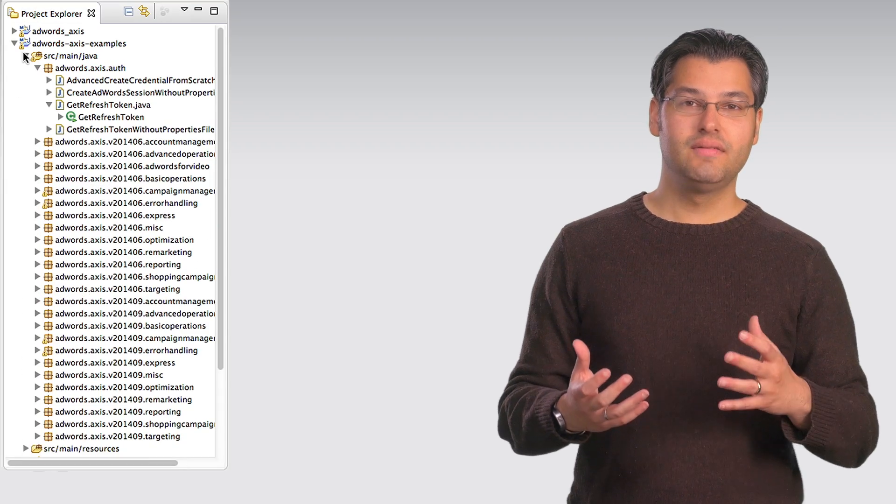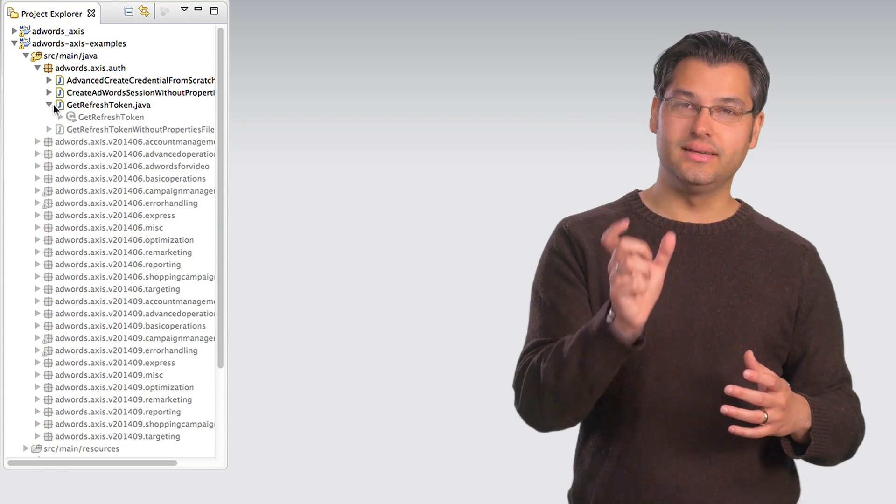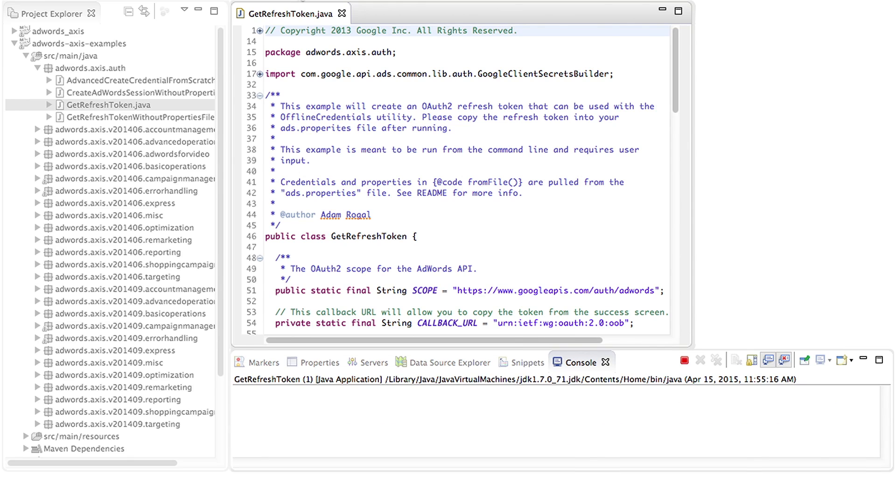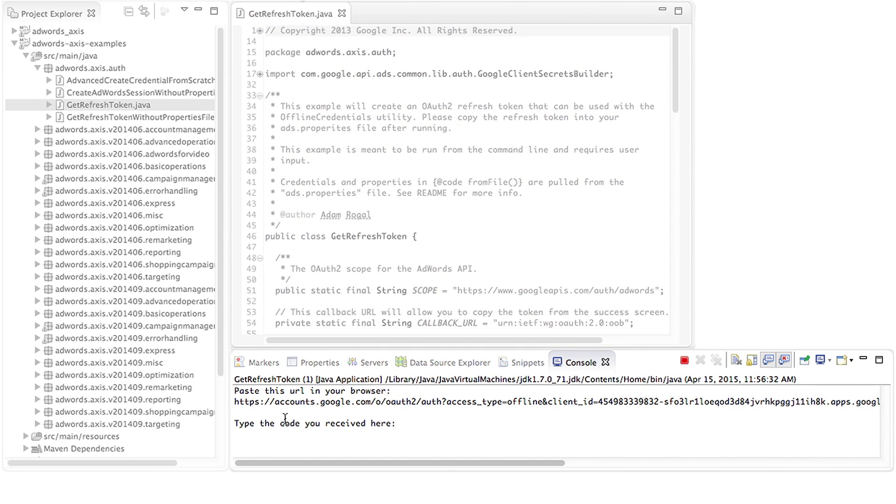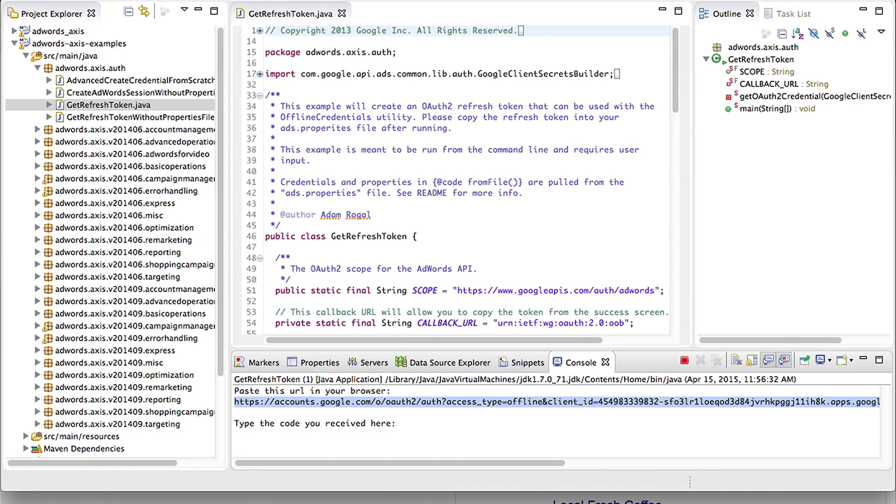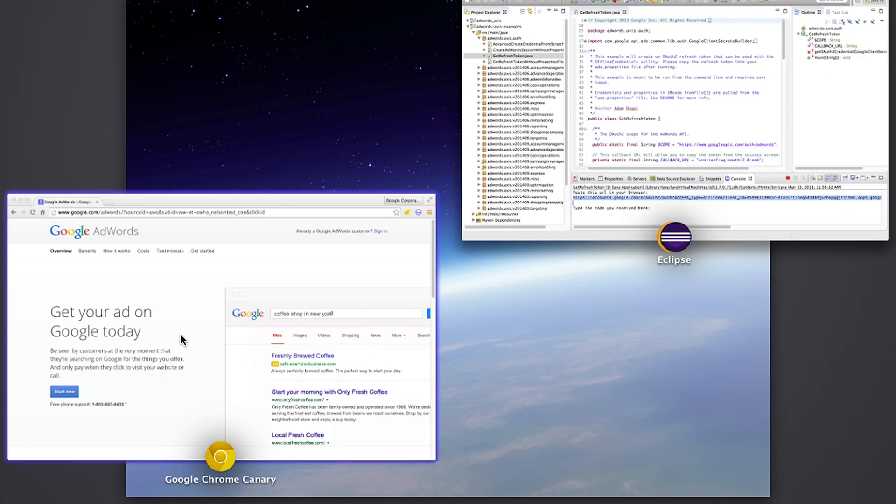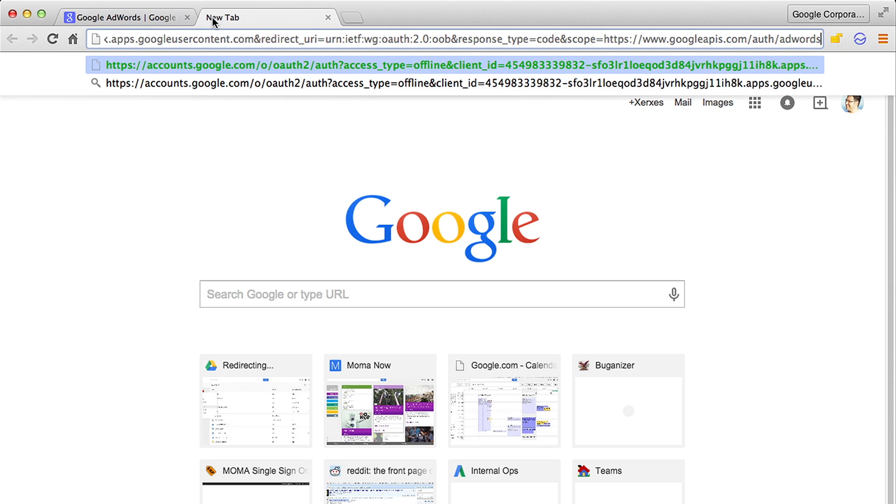In Eclipse, find getRefreshToken.java and execute it. The Eclipse console will print a URL. Open a browser and log into AdWords with your test MCC account.